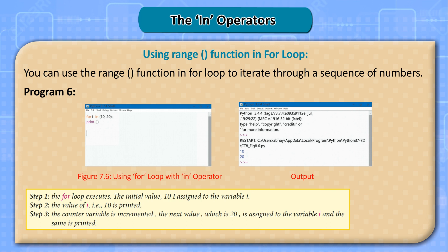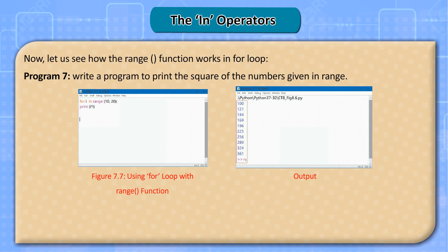Step 1: the for loop executes and the initial value 10 is assigned to the variable. Step 2: the value of i, 10, is printed. Step 3: the counter variable is incremented. The next value, which is 20, is assigned to variable i and the same is printed.